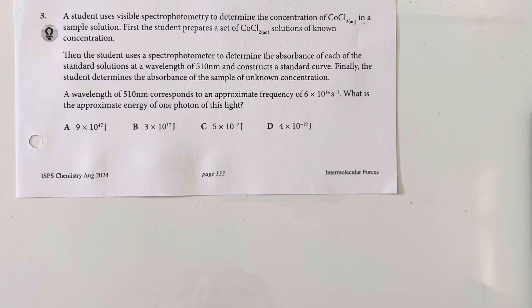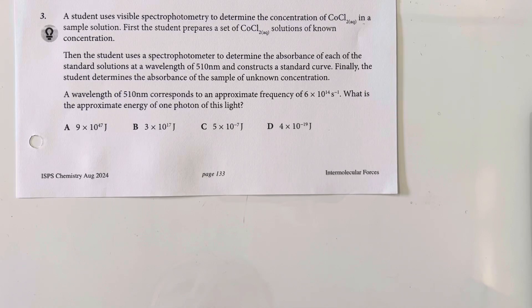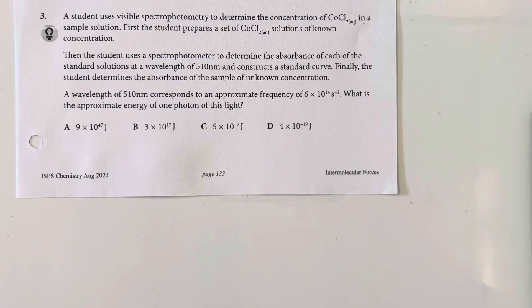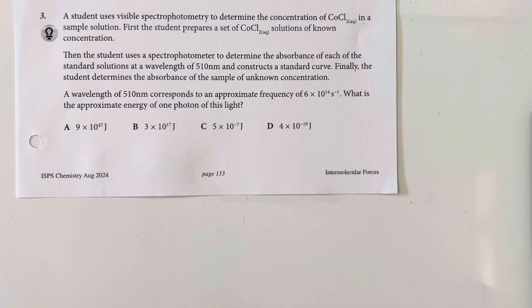A student uses visible spectroscopy to determine the concentration of cobalt to chloride in a sample solution. The student prepares solutions of known concentration. Then a student uses a spectrophotometer to determine the absorbance of each of the standard solutions at a wavelength of 510 nanometers and constructs a standard curve. Finally, the student determines the absorbance of the sample of the unknown concentration.